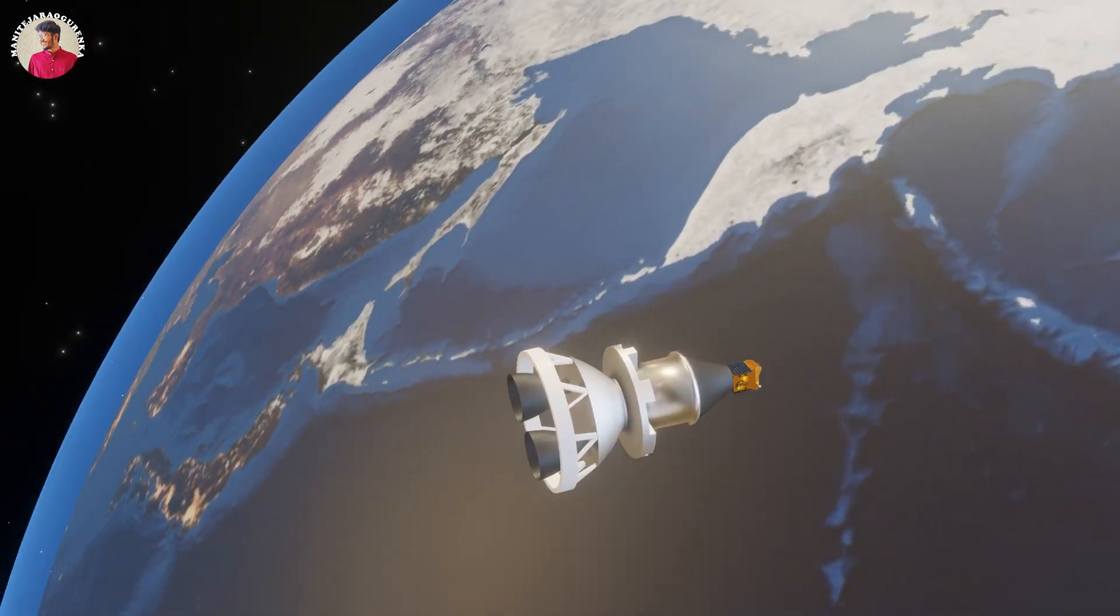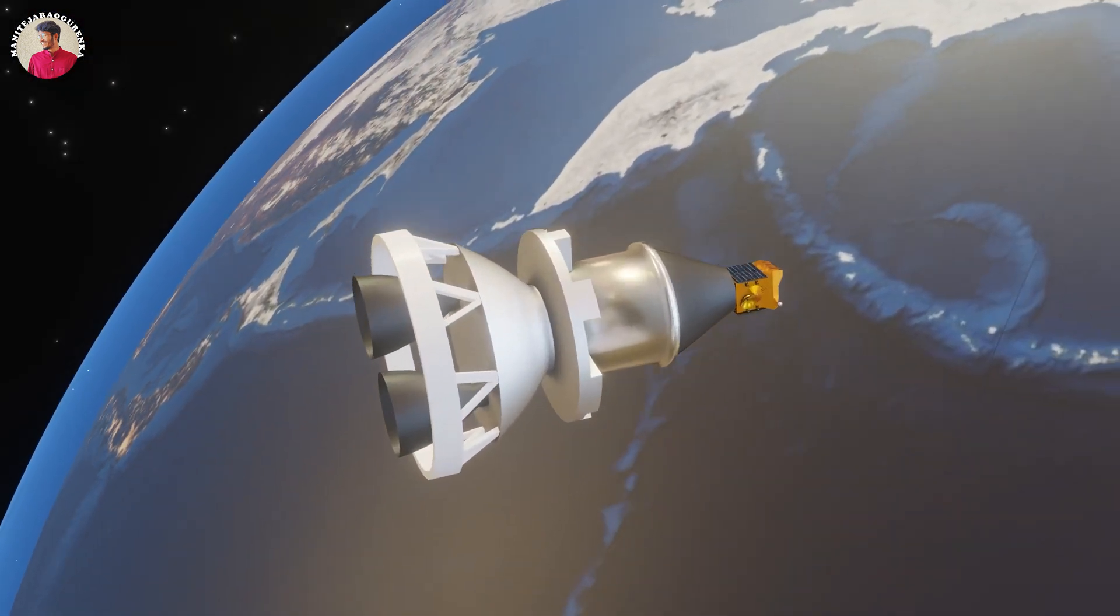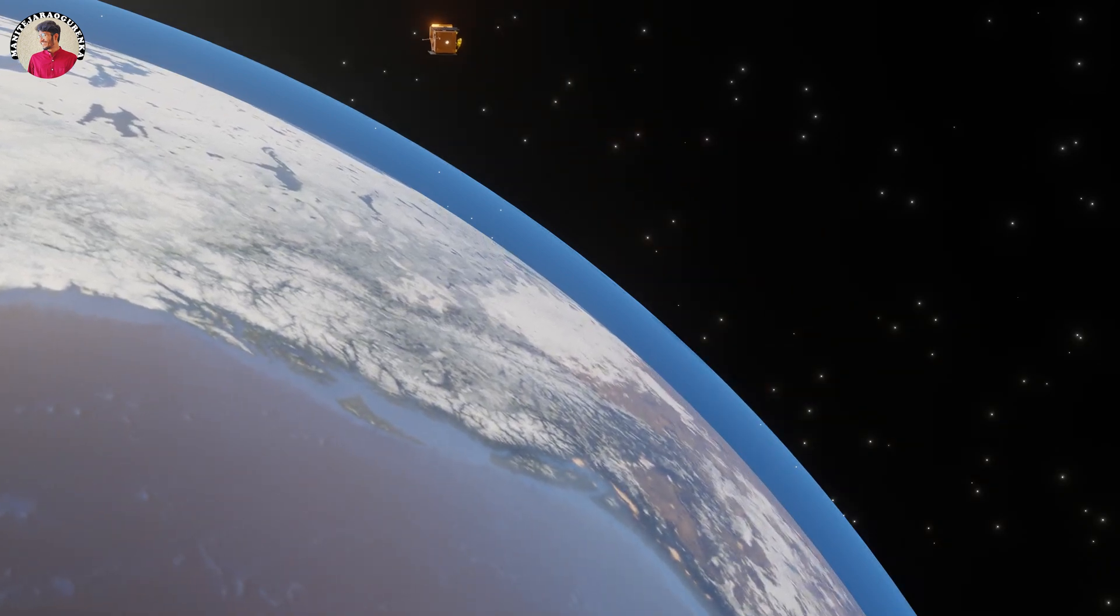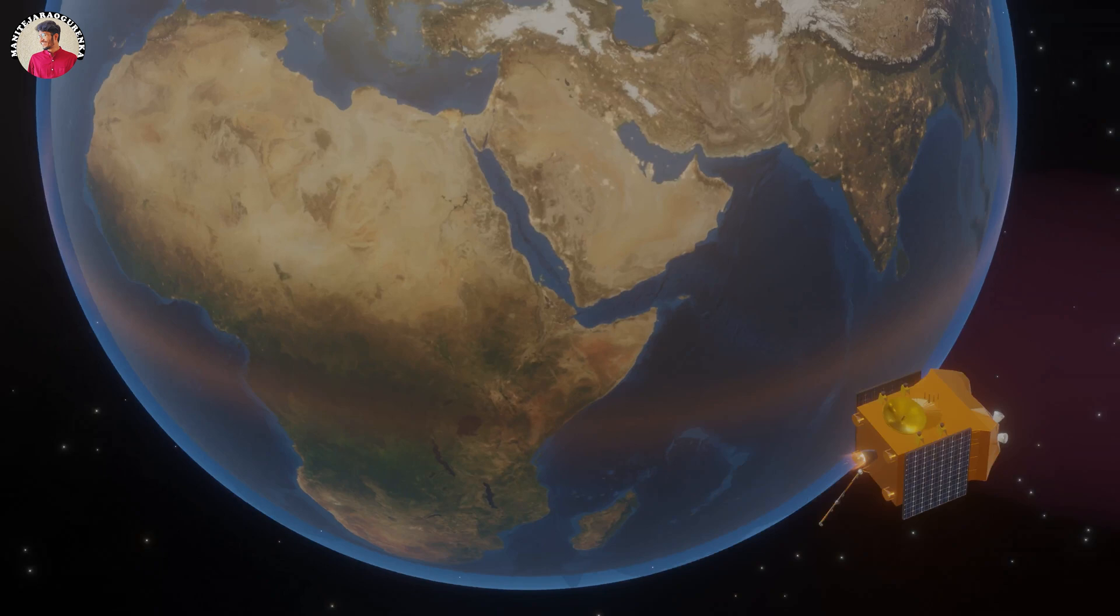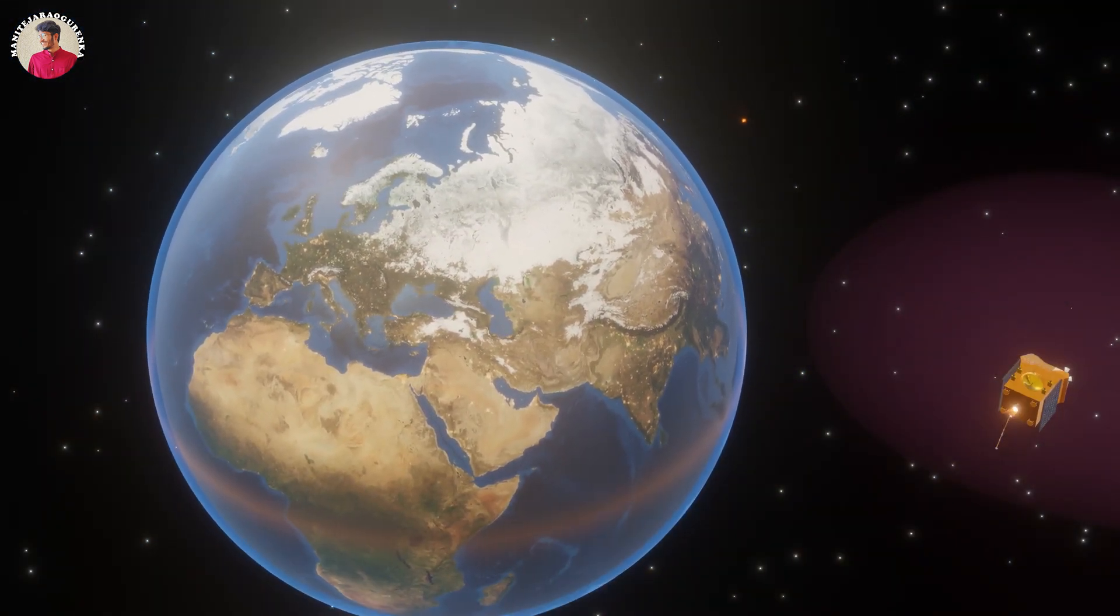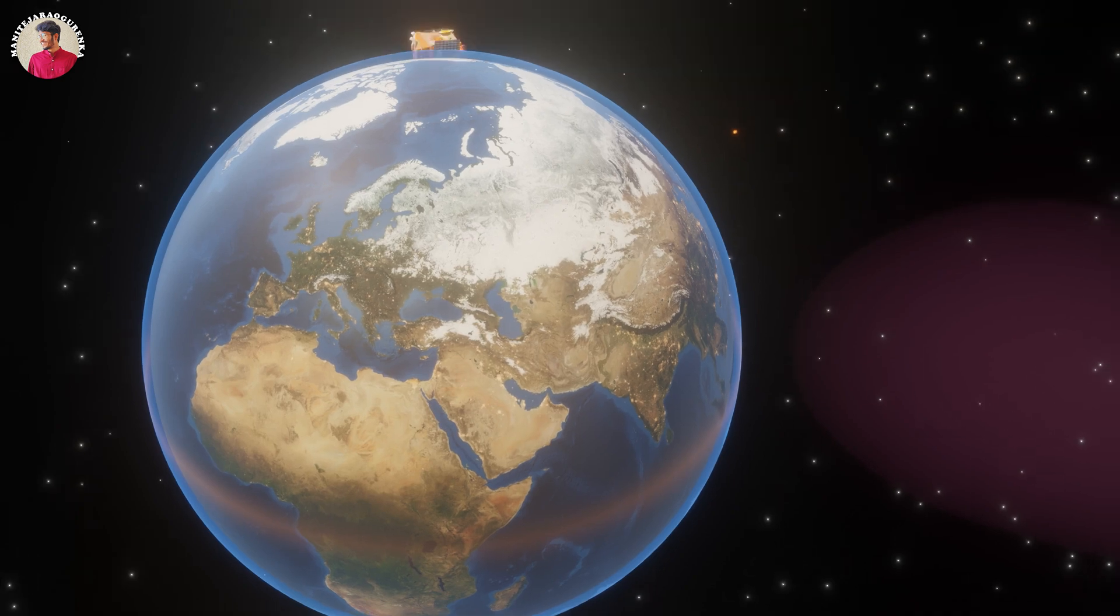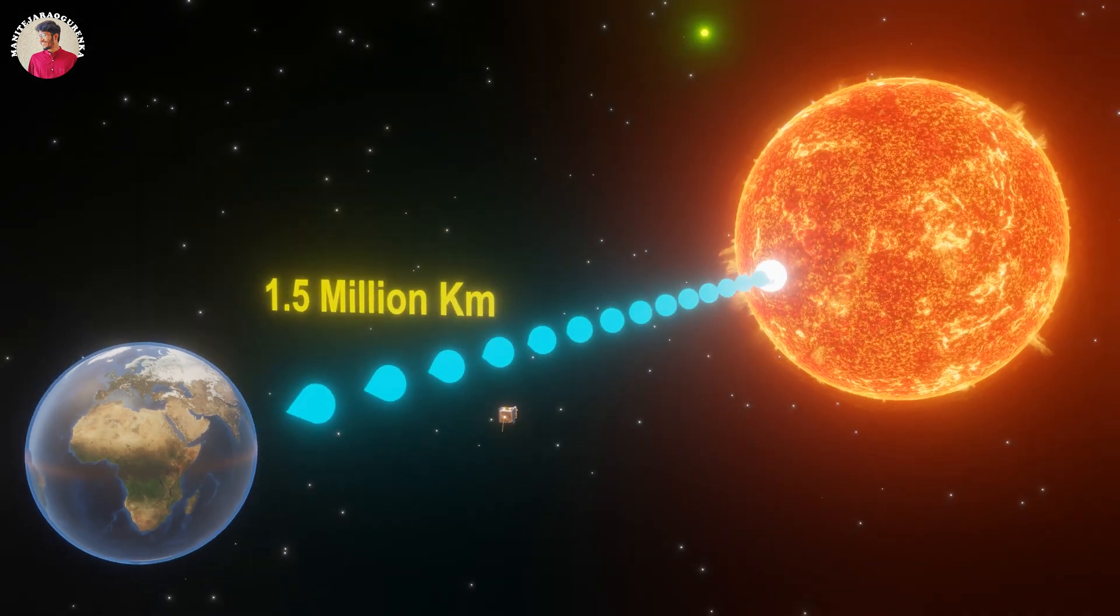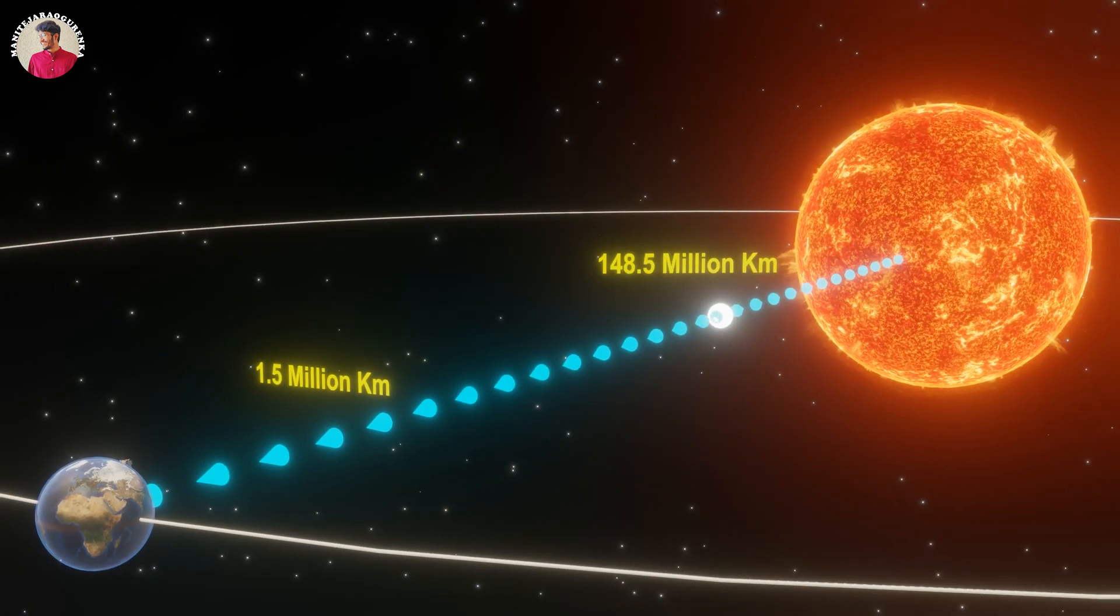At the time of PS4 shutoff, the Aditya L1 will be placed in a lower Earth orbit. After the separation of Aditya L1 from the launch vehicle, it travels to Lagrange Point 1. This Lagrange Point 1 is around 1.5 million kilometers from Earth, and about 148.5 million kilometers from the Sun.